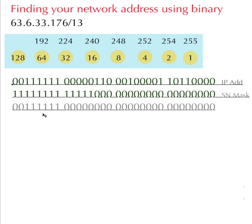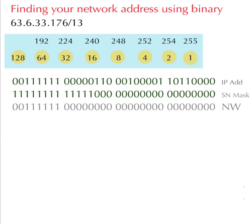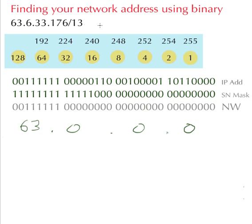So that is our network address. Now what we've got to do is convert this into decimal, which is going to be fairly easy. You look at this number here - it's exactly the same. Like I said, if you've got 255 in a subnet mask, that portion of your IP address won't change. So we know our network is 63.0.0.0.